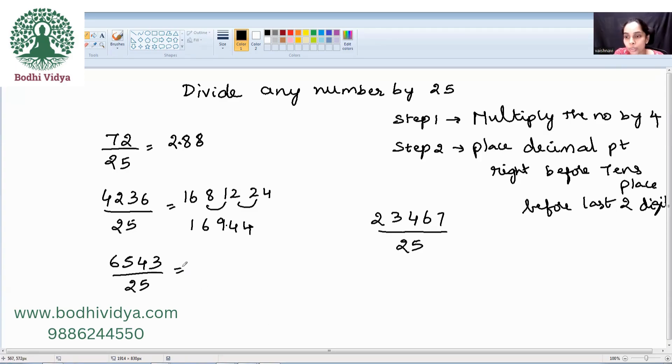Here now, 4 times 6 is 24, 20, 16 and 12. Carrying. 26172. Place the decimal point. So, your answer is 261.72.